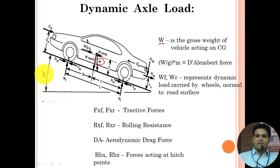Apart from gross weight, considering friction resisting the vehicle's movement, we have a D'Alembert force indicated by (W/G)·a. WF and WR represent the dynamic load carried by the wheels normal to the road surface — this is our area of interest. We are trying to derive the expressions for WF and WR.